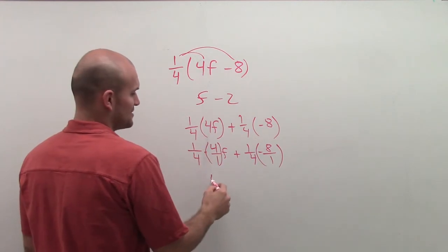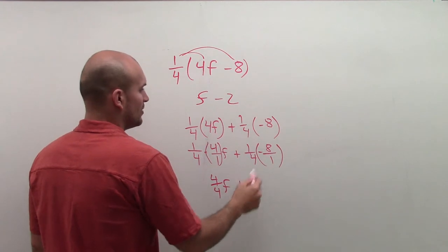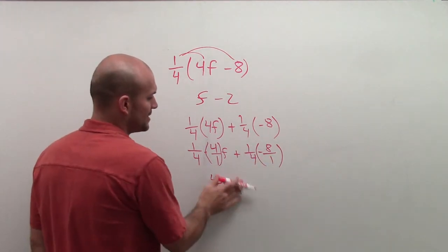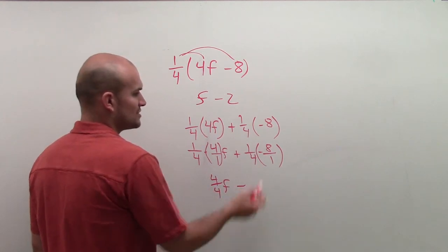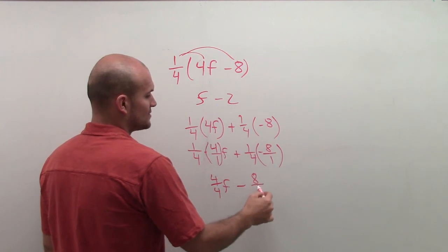So 1 times 4 is 4. 4 times 1 is 4f plus, and it doesn't matter where your negative sign is going to go. You could use top, bottom, you can just realize that it's just going to be a negative fraction. A positive times a negative is going to produce a negative fraction. And then I have 8 over 4.